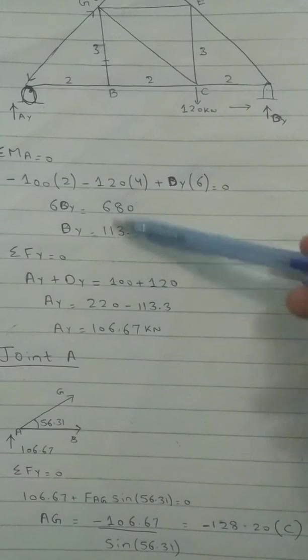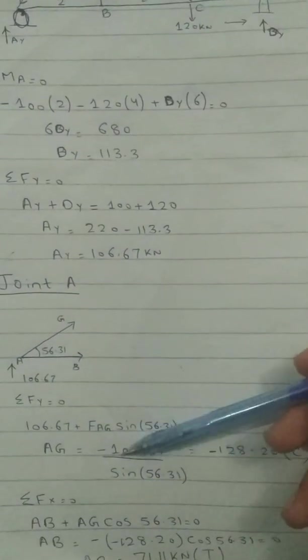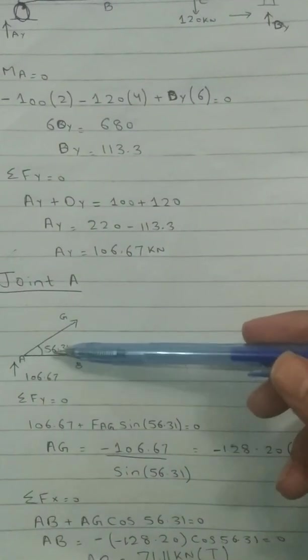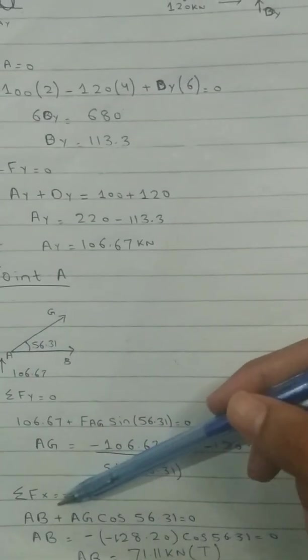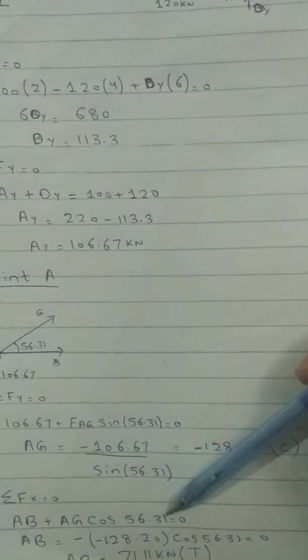And by the sum of forces in x direction equal to zero, you can calculate the force inside the member AB. AB plus AG cos 56.31 is equal to zero.